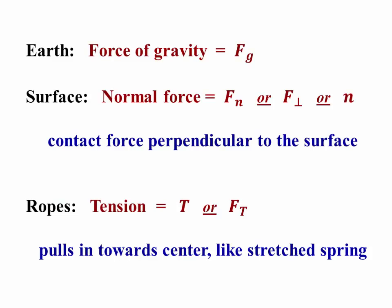The kind of environment we're talking about is the earth, which produces a force of gravity in the down direction, a surface which produces a normal force. Some notations for that would be F sub n for normal, F perpendicular indicating that it is perpendicular to the surface, or the symbol n for normal. This is a contact force produced by the surface on the body that is always perpendicular to the surface.